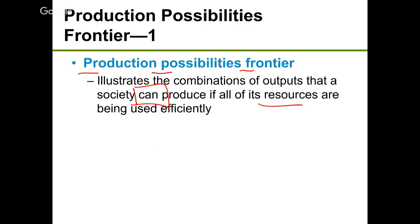Remember from last class we talked about scarcity — we don't have enough resources for everything. Because of scarce resources, there will be a limit on how much we can produce. The PPF shows what our potential of production is.